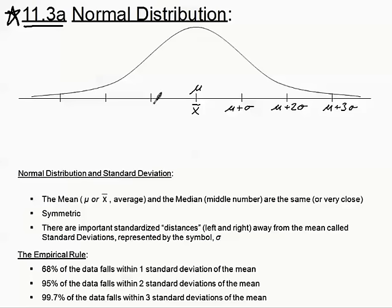If we go to the left side, we'd be subtracting from our mean. The first tick mark to the left is mu minus one standard deviation. The second is mu minus two standard deviations. The third is mu minus three standard deviations. One of our objectives is to label the normal curve with the mean and then add or subtract standard deviations to label each tick mark.